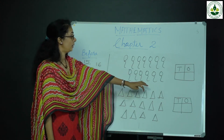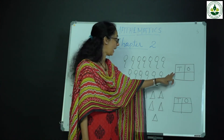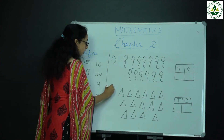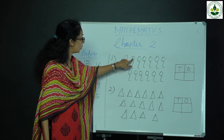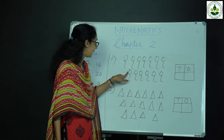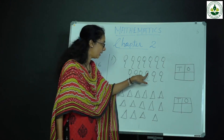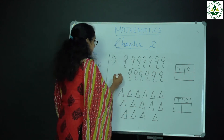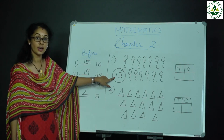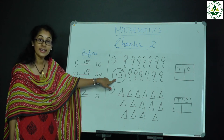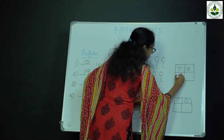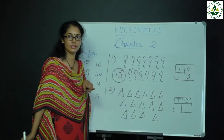Write the number and write tens and ones. First count the total number of balloons: 1, 2, 3, 4, 5, 6, 7, 8, 9, 10, 11, 12, 13. How many balloons? 13. How many tens and ones in 13? 1 ten and 3 ones — write 1 in the tens column and 3 in the ones column.